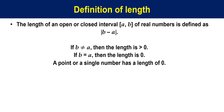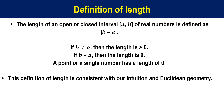Let's start with the definition of length. The length of an open or closed interval a and b of real numbers is defined as absolute value of b minus a. If b is not equal to a, then the length is larger than 0. If b equals a, then the length is 0. A point or a single number has a length of 0. This definition of length is consistent with our intuition and Euclidean geometry.